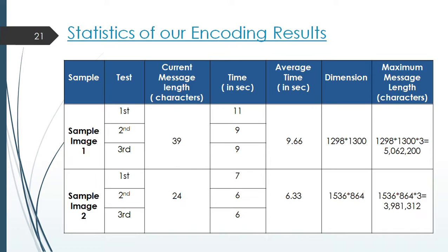For the second sample image we again used three test cases. And for this time we used 24 characters long message. And the average time for running the algorithm is 6.33 seconds. And this time the dimension of the image is 1536 by 864 pixels. And the maximum character that can be encoded inside the image is 3,981,312 characters.